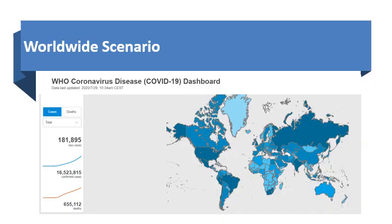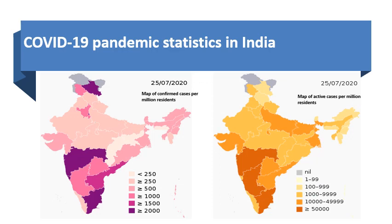The worldwide outbreak of COVID-19 has brought the world to an absolute standstill, affecting more than 213 countries and territories around the globe. The data map reported by the World Health Organization as of 29th of July 2020 showed around 181,000 newly infected cases and unfortunately 655,000 deaths. Whereas in our country, India, the scenario seems a little different due to the dense population. India has reported more than 1.6 million cases and more than 35,000 deaths since the last month.